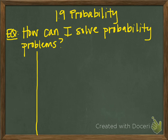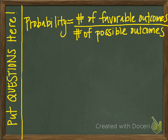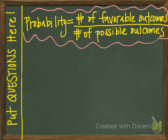These notes cover probability, section 1.9 of the gray book. The central question is: how can I solve probability problems? Probability is a concept you first learned about in junior high. It is usually represented as a fraction, and it can be converted to a decimal or to a percent.